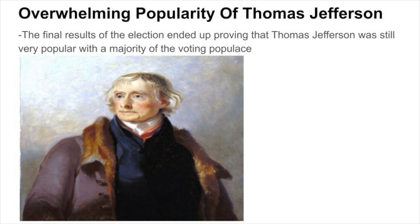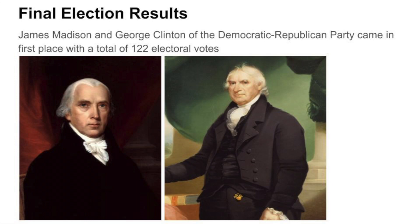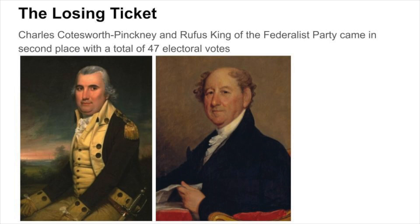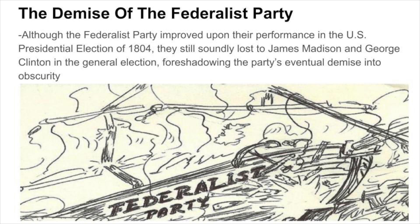The final results of the election proved that Thomas Jefferson was still very popular with a majority of the voting populace. Coming in first place were James Madison and George Clinton of the Democratic-Republican Party, with a total of 122 electoral votes. Coming in second place were Charles Cotesworth Pinckney and Rufus King of the Federalist Party, with a total of 47 electoral votes. Although the Federalist Party improved upon their performance in the 1804 presidential election, they still soundly lost, foreshadowing the party's eventual demise into obscurity.